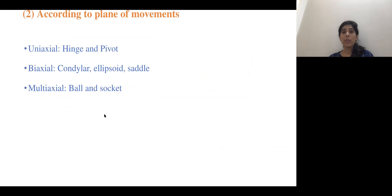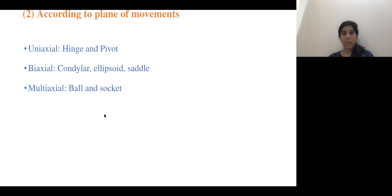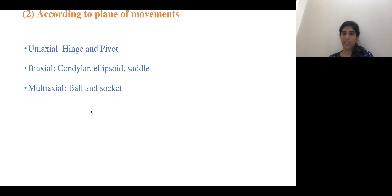Joints can also be classified by plane of movement. Uniaxial joints permit only one plane of motion — hinge and pivot joints are examples. Biaxial joints allow two-plane motion — condylar, ellipsoid, and saddle joints are examples. Multiaxial joints permit multiple plane movements — ball and socket joints are multiaxial.